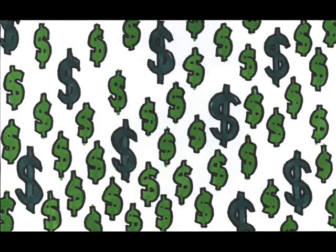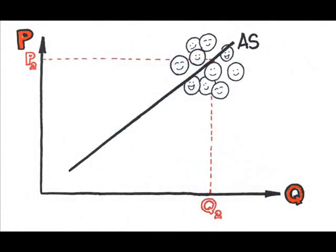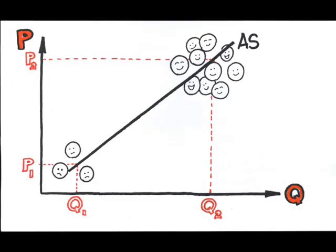Why is aggregate supply upward sloping? Well, for pretty much the same reasons that a single product supply curve is upward sloping, cost and profit. As the price level rises in an economy, other things staying the same, more producers, even inefficient, high cost producers, can produce and survive. At lower price levels, only the lowest cost producers can continue. On the profit side, at higher price levels, other things staying the same, profits are higher, giving greater incentive to produce.